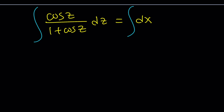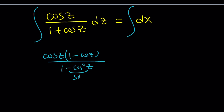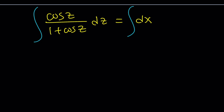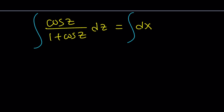How do you integrate cosine z divided by 1 plus cosine z? There are a couple of ways. We could multiply by the conjugate 1 minus cosine z, which gives a 1 minus cosine squared z — that's sine squared — so we'd get cosine z times 1 minus cosine z divided by sine squared. However, that could be problematic. Instead, let's use what's called the Weierstrass substitution.